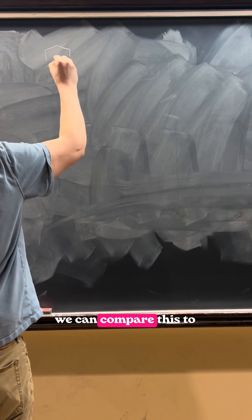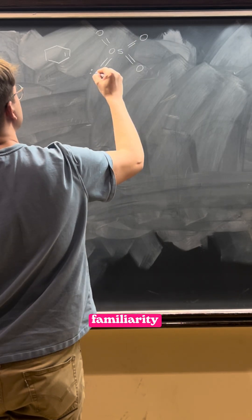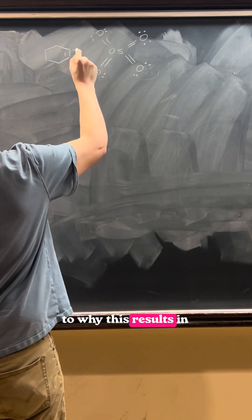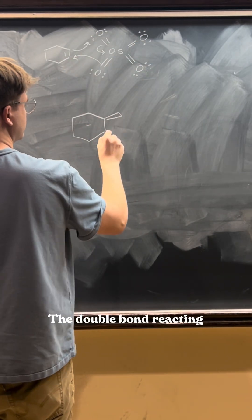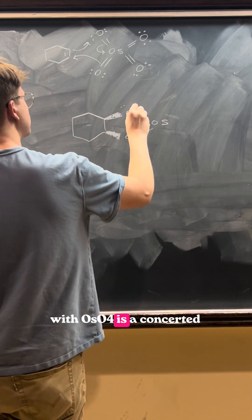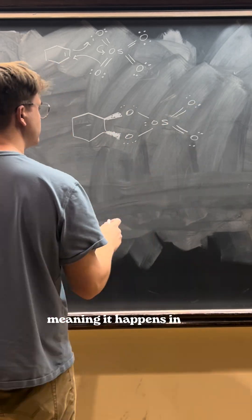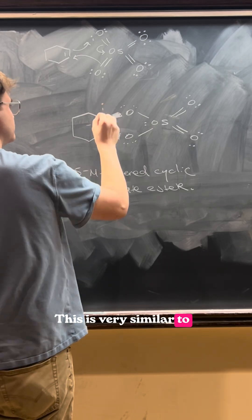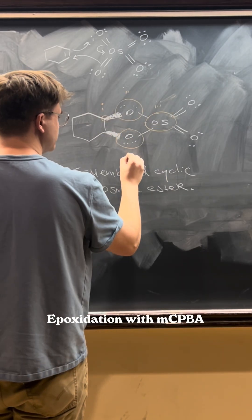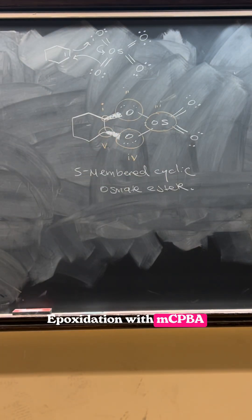Now there is a reaction we can compare this to to help with some familiarity to why this results in syn-addition. The double bond reacting with osmium tetroxide is a concerted mechanism, meaning it happens in one step. This is very similar to what we discussed when talking about epoxidation with MCPBA.